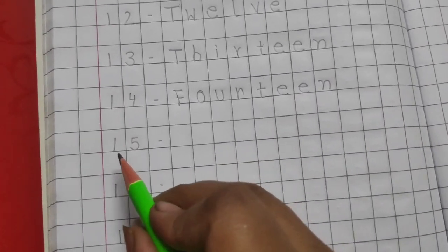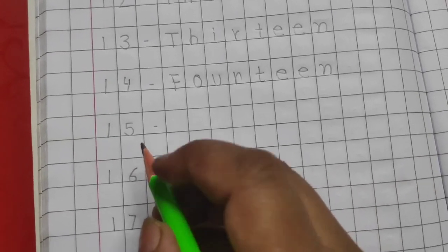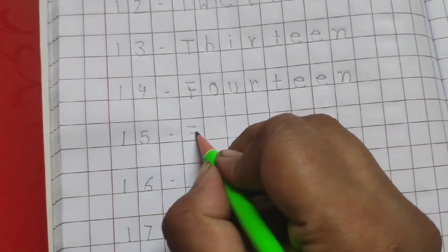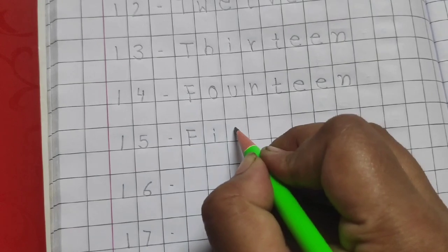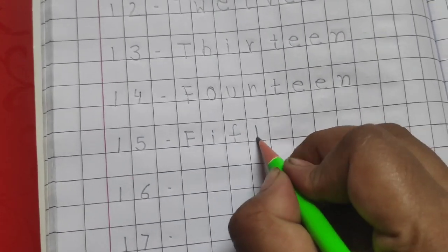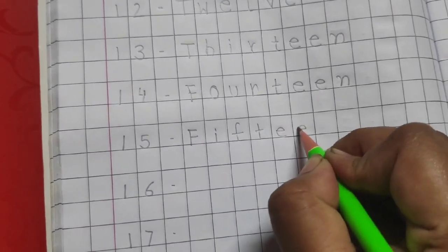And the next number is 15. The number name for 15 is F-I-F-T-E-E-N.